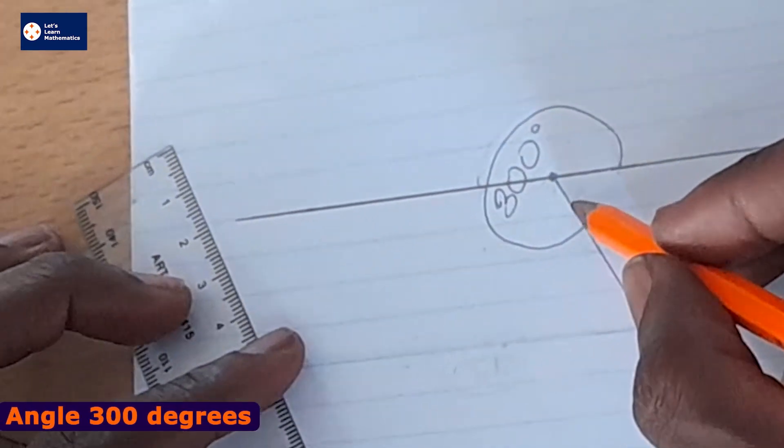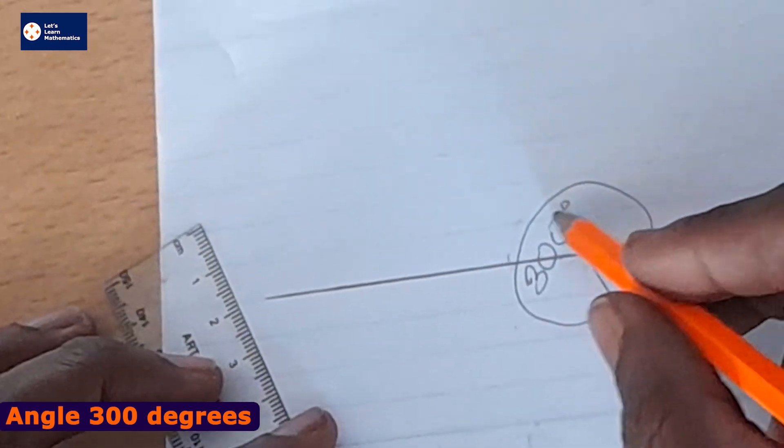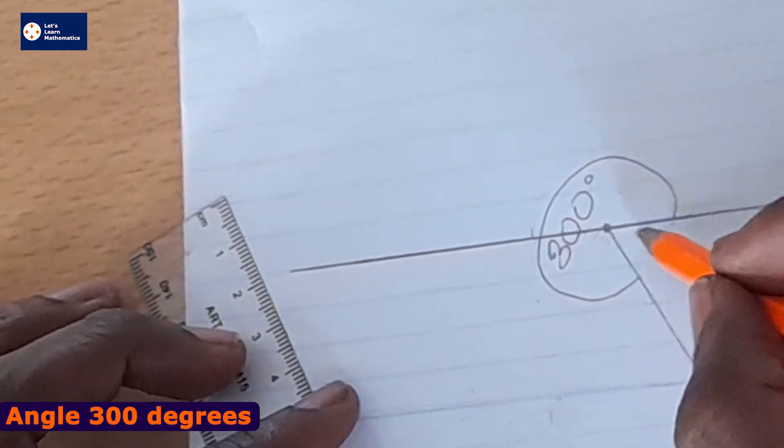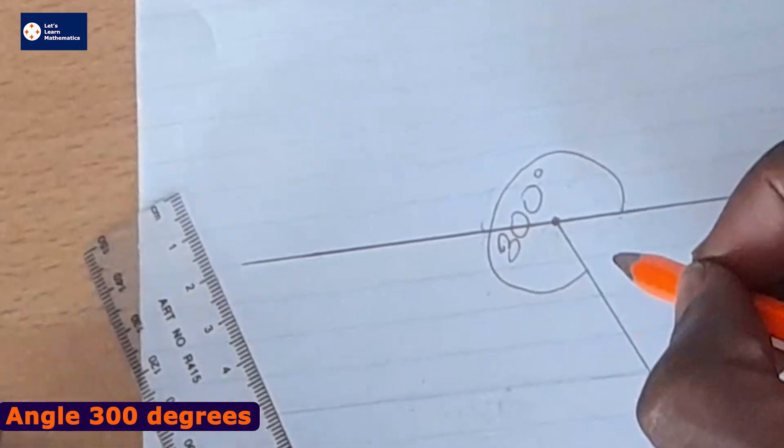Since this is 60 degrees, when we add this 300 to this 60, we are getting an angle in a full circle.